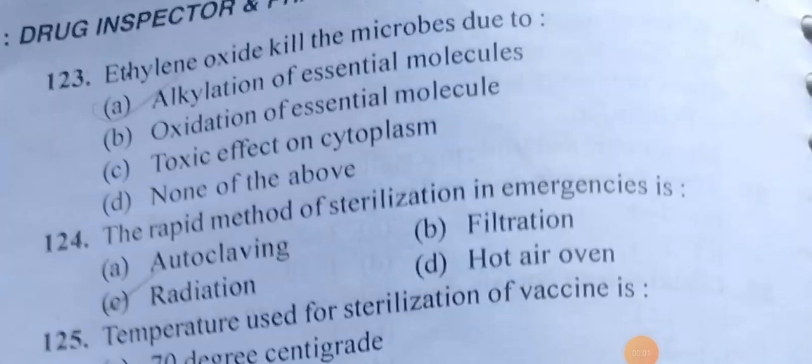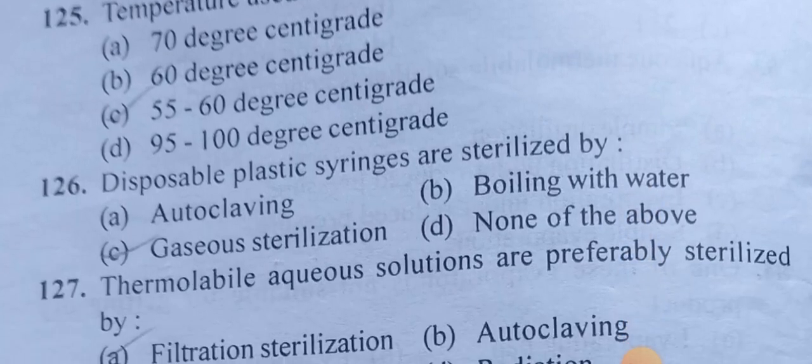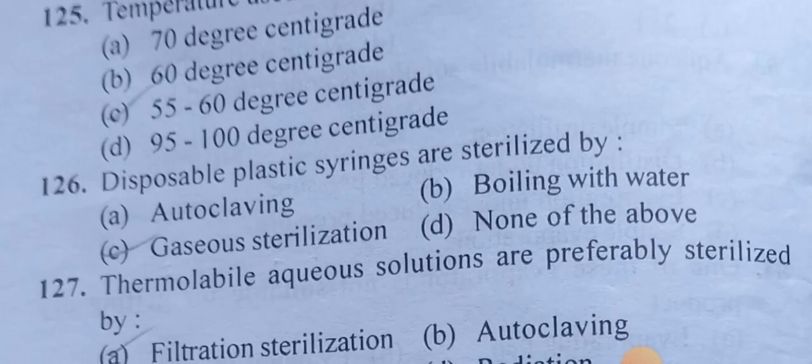Ethylene oxide kills microbes due to alkylation of essential molecules. The rapid method of sterilization in emergencies is radiation. The temperature used for sterilization of vaccines is 55 to 60 degrees centigrade. Disposable plastic syringes are sterilized by gaseous sterilization.